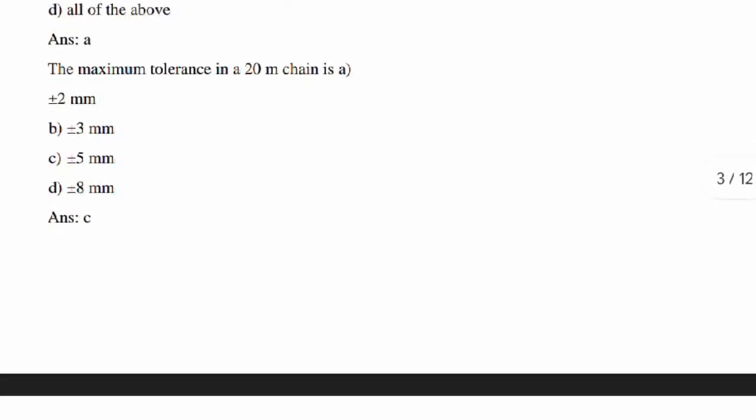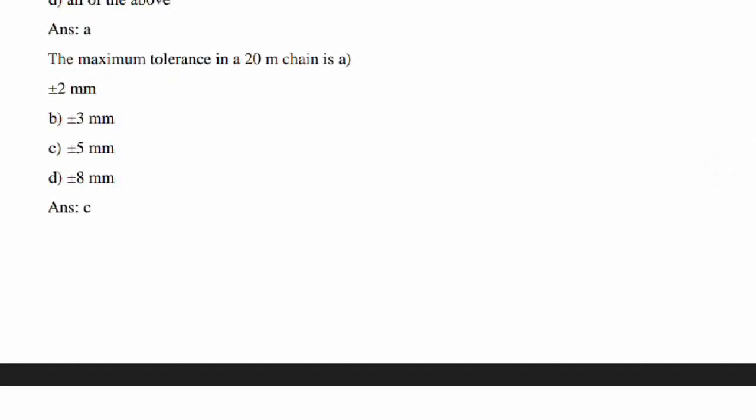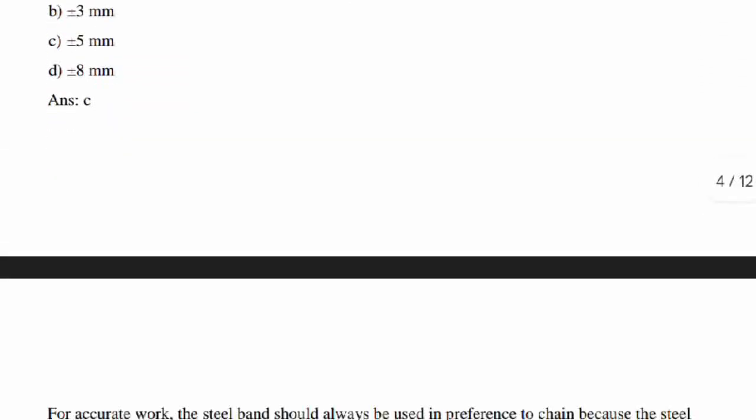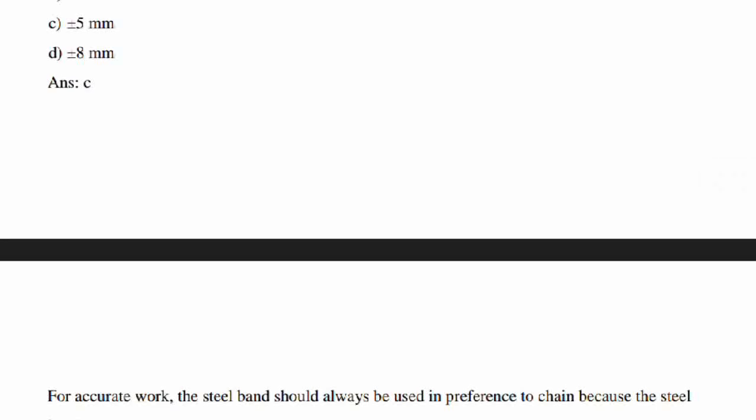The maximum tolerance in a 20 meters chain is what? It is plus or minus 5 mm. The maximum tolerance in 20 meters chain is plus or minus 5 mm.